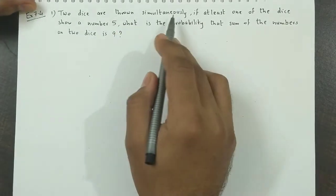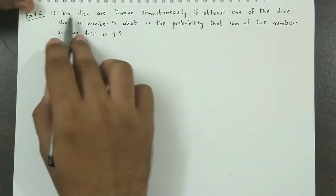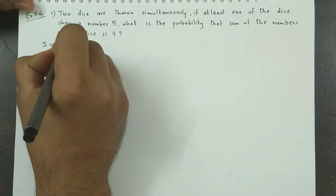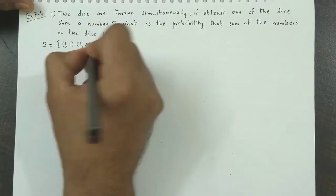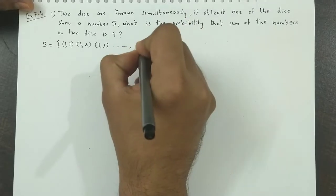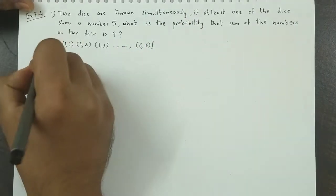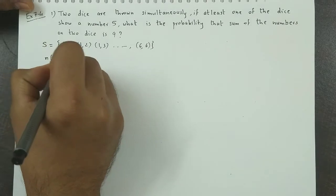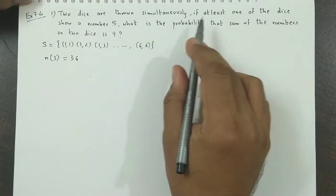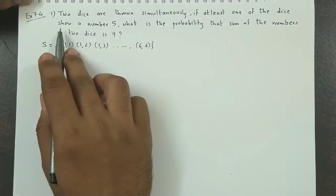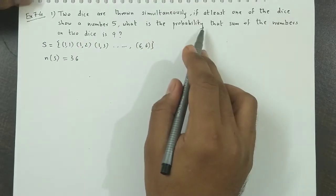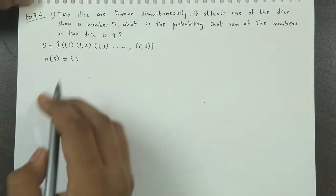Two dice are thrown simultaneously. Whenever two dice are thrown simultaneously, the sample space is (1,1), (1,2), (1,3) up to (6,6). N would be 36. If at least one of the dice shows the number 5, what is the probability that the sum of numbers on the two dice is 9?